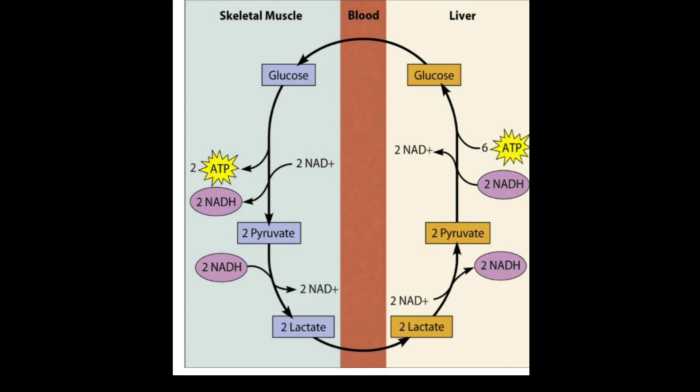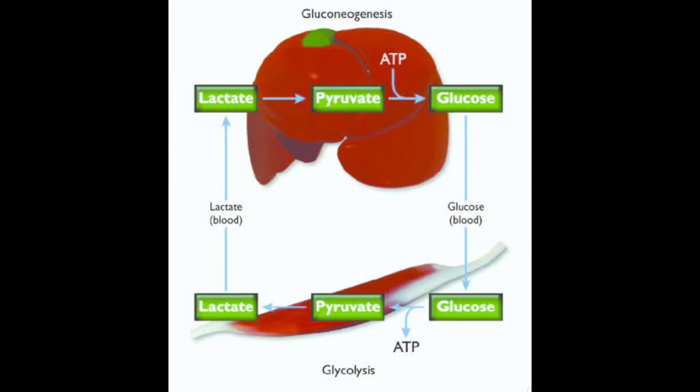We have glucose, which leads to pyruvate, then again to lactate, and then again back to the liver. So this cycle continues — that is why we call it the Cori cycle.